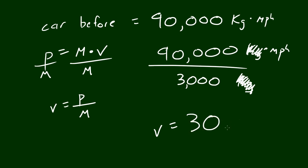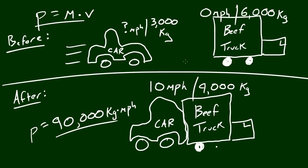We end up with a velocity equal to 30 miles per hour, and you can see that because that's the only unit we have left. So there you go — that is how you figure out, in this example, what a physicist does when working with law enforcement. They're going to have some information and they want you to put the rest of the puzzle together. Little tidbit: if you're driving a car that's 3,000 kilograms and crash into a beef truck that's 6,000 kilograms, and you end up going 10 miles per hour after the crash, then you were going 30 miles per hour to begin with.